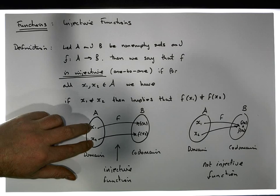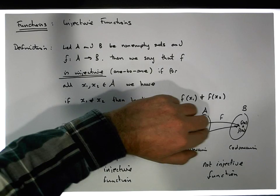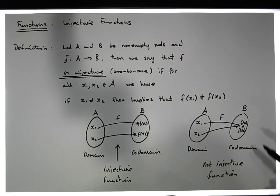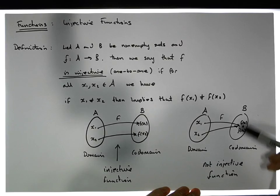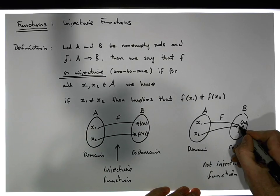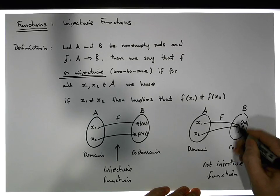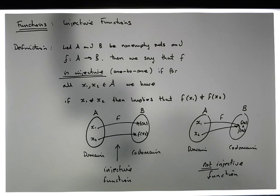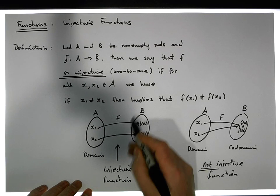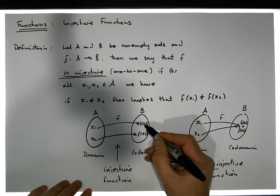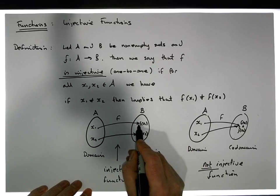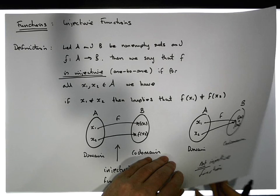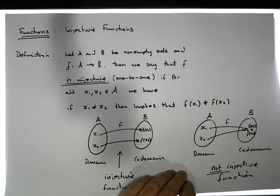So to summarize: two different values going to different values means the function is injective; two different values going to the same value means it's not injective. From a graph perspective, if any value inside the range has two or more incoming edges, the function is not injective. If all values in the range have only a single arrow pointing into them, that is evidence the function is injective. Let's now look at a specific example to test whether a function is injective.